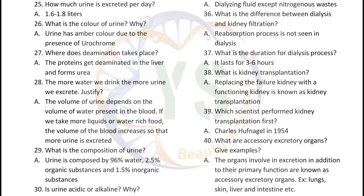How much urine is excreted per day? 1.6 to 1.8 liters. What is the color of urine and why? Urine has an amber color, that means light yellow color, due to the presence of urochrome. Where does deamination take place? Proteins get deaminated in the liver and form urea. The more water we drink, the more urine we excrete.